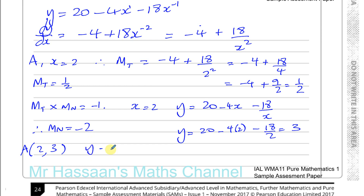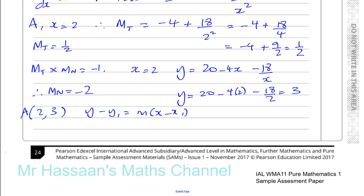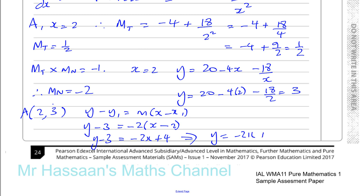Now we can work out the equation of the line using y minus y1 equals m times x minus x1. Substituting in: y minus 3 equals minus 2 times x minus 2. So y minus 3 equals minus 2x plus 4. Adding 3 to both sides gives y equals minus 2x plus 7. And there we have the answer to part A — finding the equation of the normal to the curve.